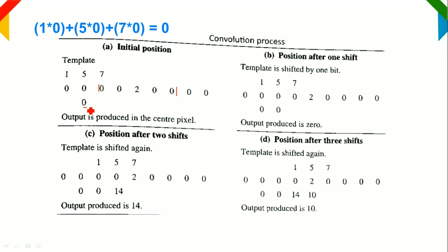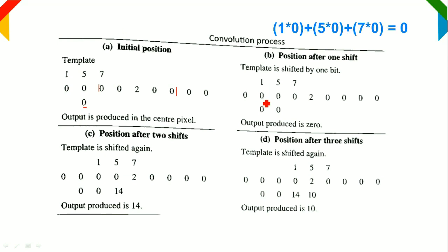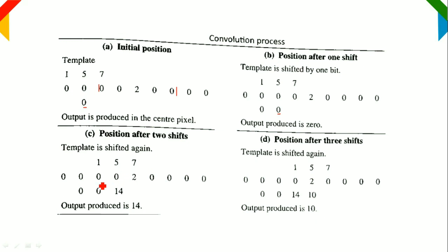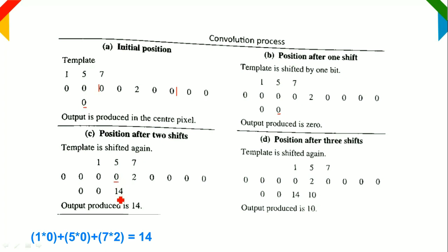Next, we move the template one step. Again: 1×0 + 5×0 + 7×0 = 0, assigned to the center pixel — value is 0. Moving one more step: 1×0 + 5×0 + 7×2 = 0 + 0 + 14 = 14. That resultant value of 14 is assigned to the center pixel at this position.